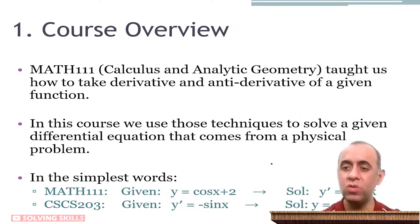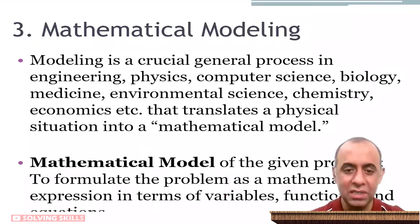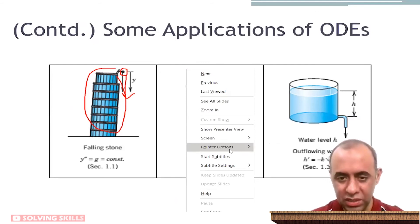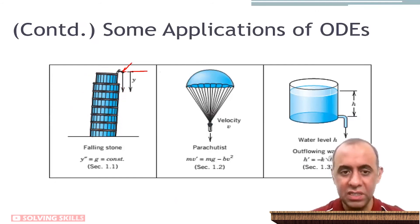Similarly, just to keep yourself motivated, always tell yourself that what we are doing is representing a physical model. Like, for example, if you're standing on a building and you throw a stone towards the ground, all of this process—the stone which leaves this point and reaches this point—the distance of this stone from the starting point is modeled using this equation: y double prime equals g.